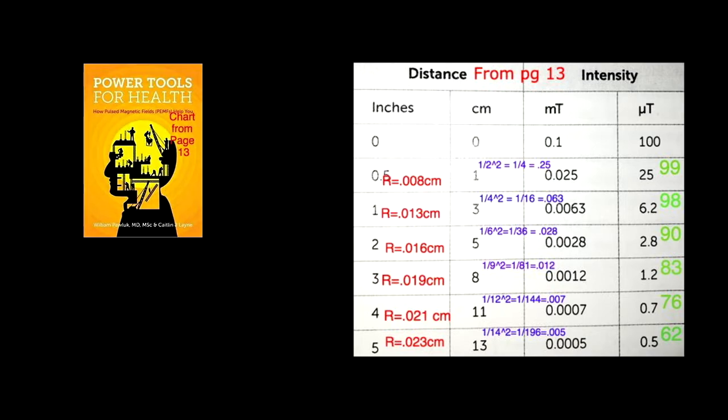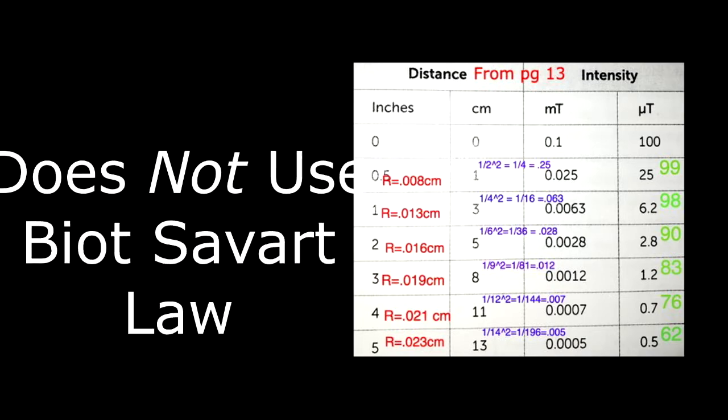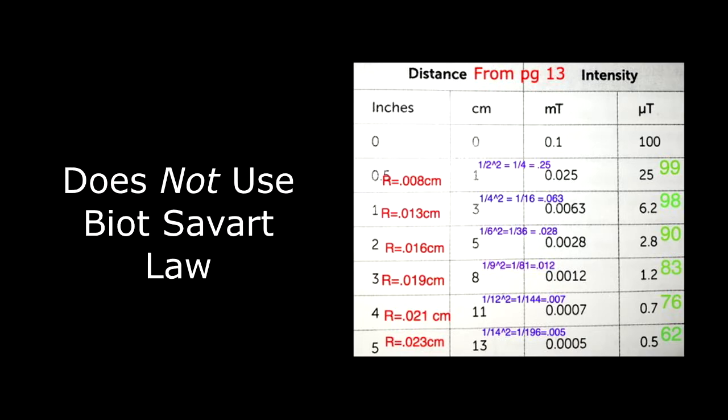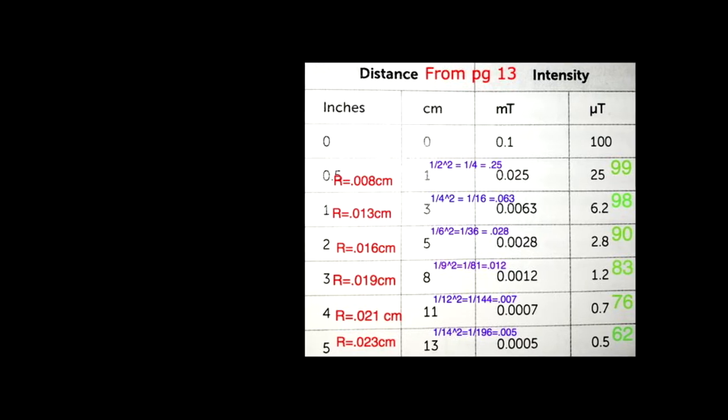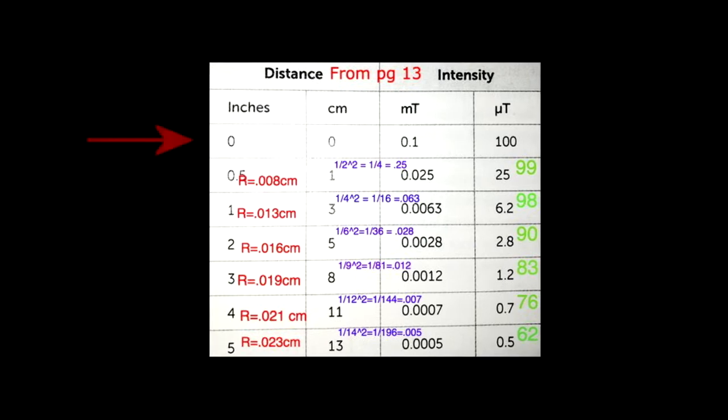See this chart here, and I'm going to do a separate video on this, but he does not use the Biot-Savart law to get these numbers. He's using a 1 over R-squared law, and he's not even using it correctly. You can see that because at 0 inches, remember 1 over R-squared is the distance away. 1 over 0 squared is infinity. Remember that from math? So how can you get an intensity at 0 inches away? That just doesn't even work.